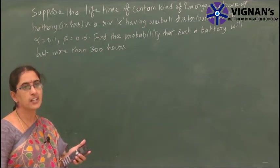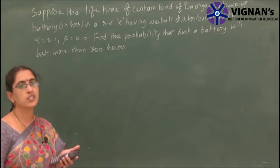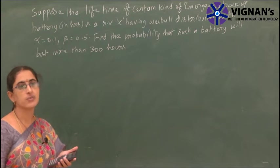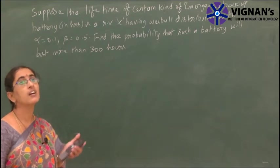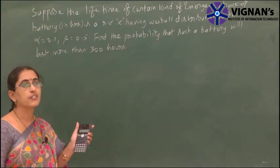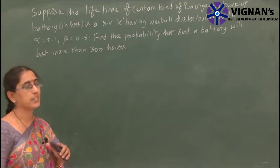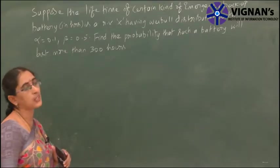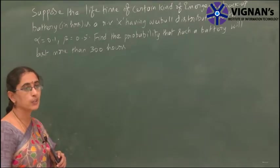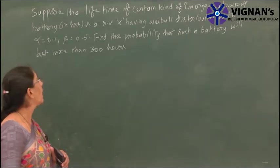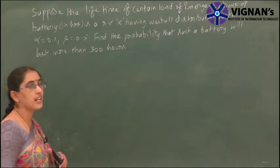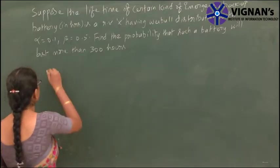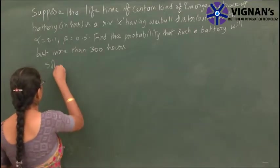Weibull distribution is also useful to find the life growth of electrical equipment. Here, alpha value is given as 0.1 and beta is given as 0.5.